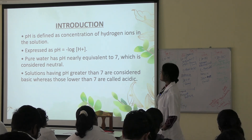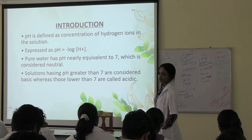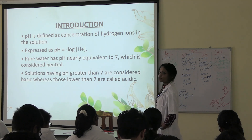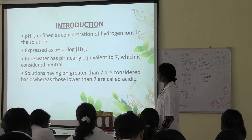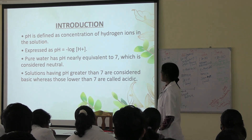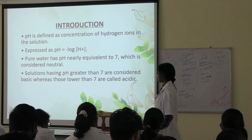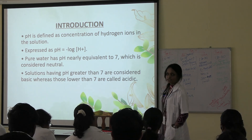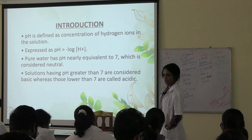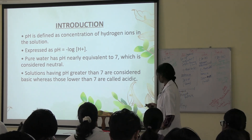Pure water has a pH nearly equivalent to 7, which is considered normal — this is the neutral pH. Solutions having pH greater than 7 are considered basic, whereas those lower than 7 are called acidic. Lower than 7 is acidic pH and more than 7 is basic or alkaline pH.